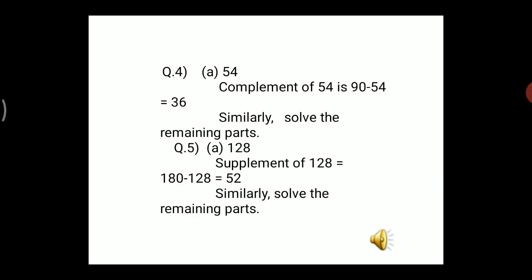Question 4: write the complements of the following angles. Part a is 54°. We need to find the angle to be added to 54° to make the sum 90°. The complement of 54° is 90° − 54° = 36°. You can also write: let x be the complement of 54°, then x + 54° = 90°, so x = 36°. Solve the remaining five parts similarly.